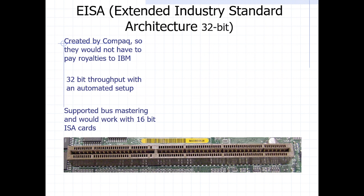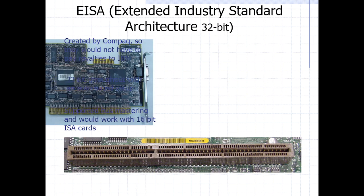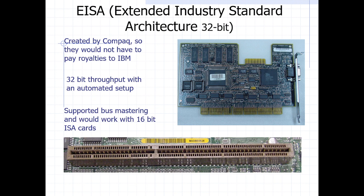We also have the Extended Industry Standard Architecture — EISA. This was meant to advance ISA requirements from 16 to 32-bit, but it was not actually viable and didn't work well with the current computer system. It became obsolete because a new bus was introduced — the PCI. So the extended ISA didn't work for long; it came for a short while and left the market.